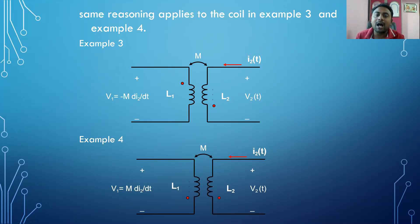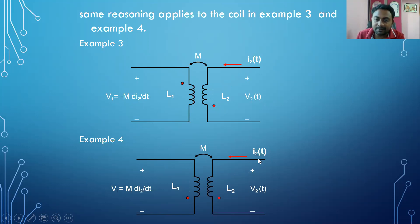In this case, one coil has current entering and the other has current leaving, so the opposite sign applies — that is −M di2/dt. In the same example, when both coils have the current leaving the dotted terminals, we use the same sign, that is +M di2/dt.